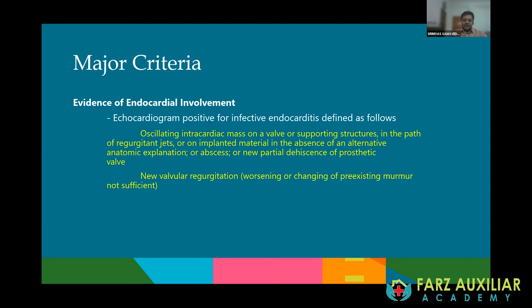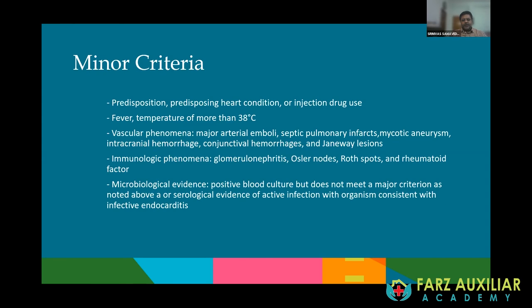New valvular regurgitation is required as a major criterion — worsening or changing of a pre-existing murmur alone is not sufficient. The minor criteria include: predisposing heart condition or intravenous drug use; fever; vascular phenomena; immunological phenomena like glomerulonephritis, Osler nodes, Roth spots, and rheumatoid factor; and microbiological evidence such as a positive blood culture that does not meet the major criteria, or serological or molecular diagnostic evidence of an organism consistent with infective endocarditis.